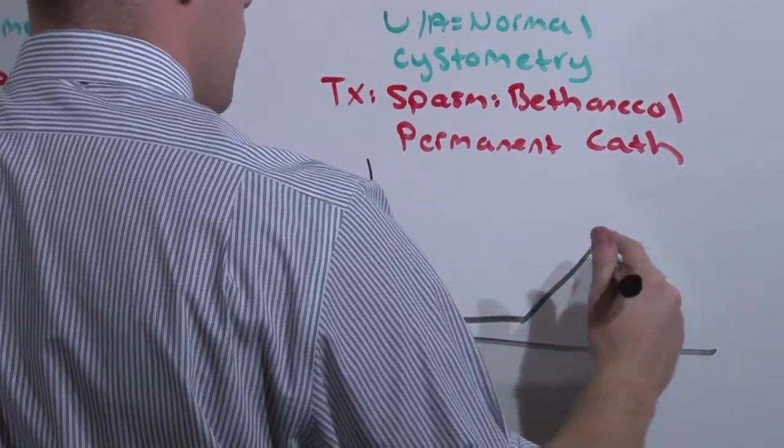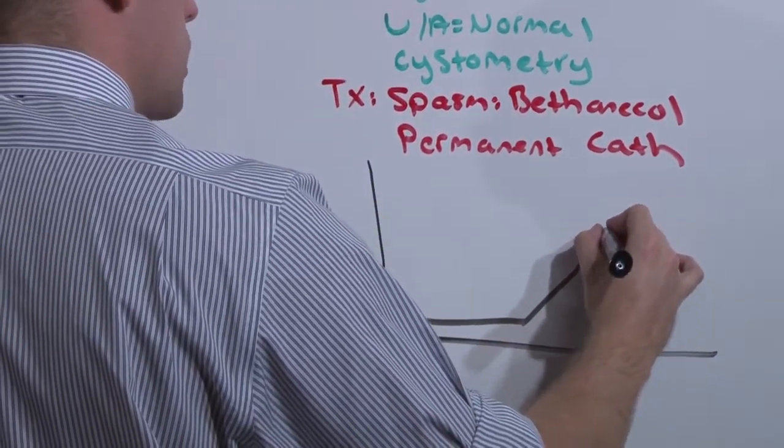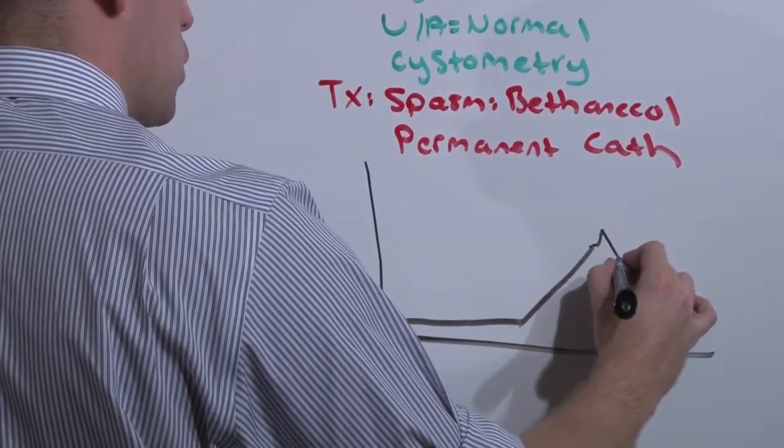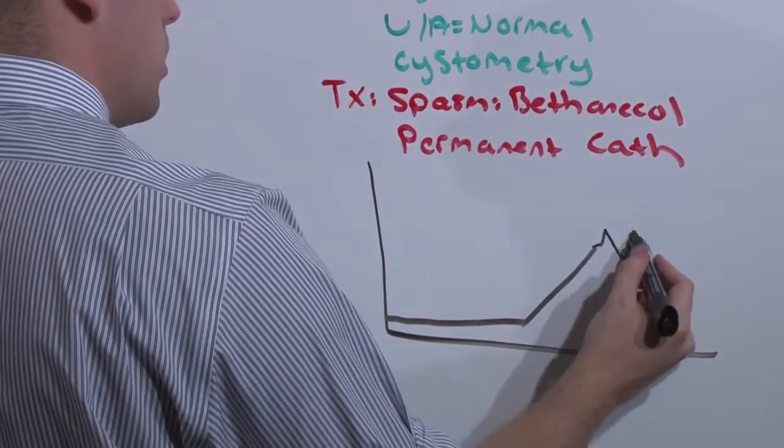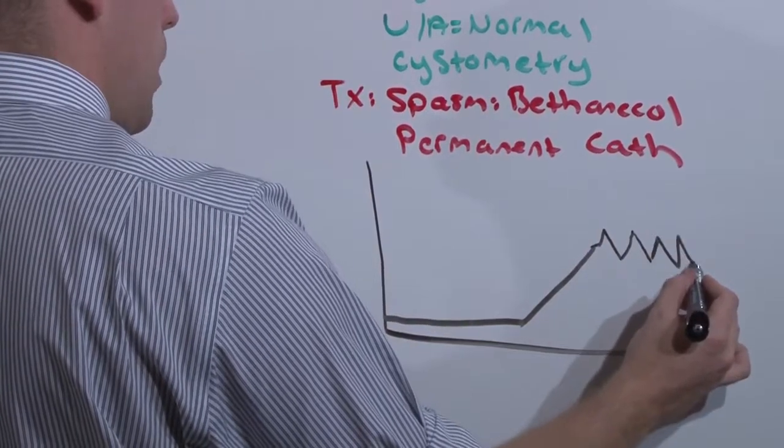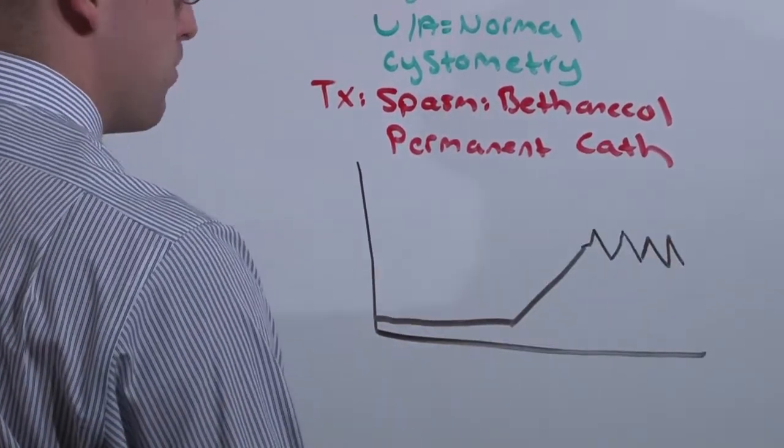But what will happen at maximum is that you'll exceed the maximum wall tension, and the patient will urinate. They'll develop some more urine, exceed the maximum wall tension, urinate, and so on and so forth until you place a Foley and drain them.